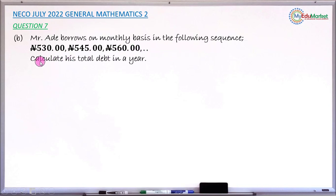The question asks us to calculate his total debt in a year if this is the sequence that gives the amount of money he borrowed each and every month. So let's attempt to answer this very question together.